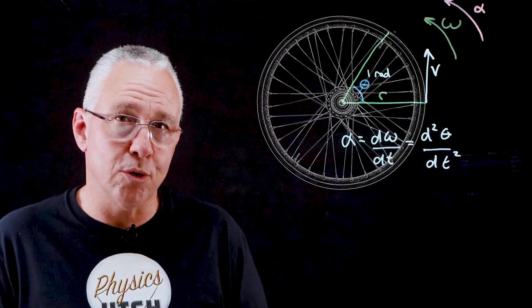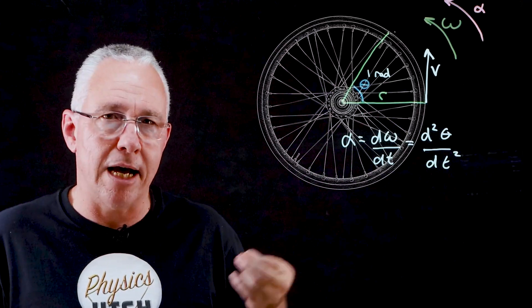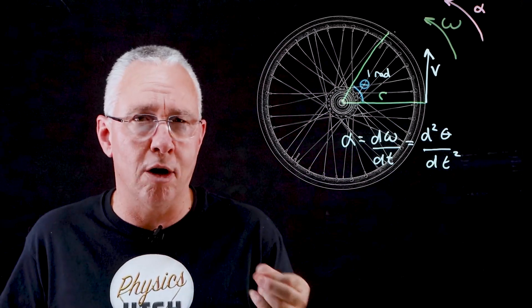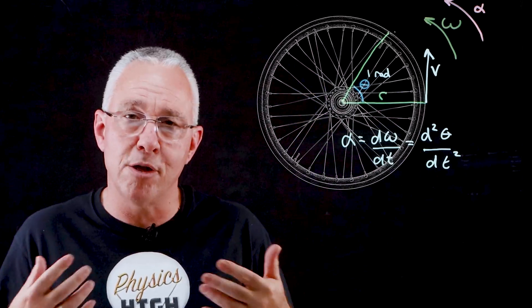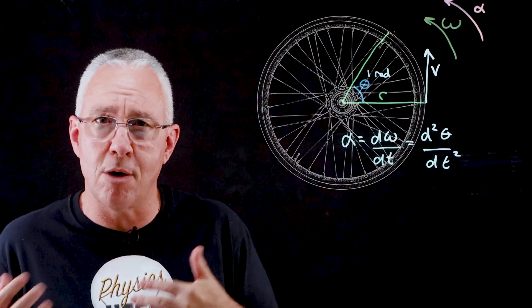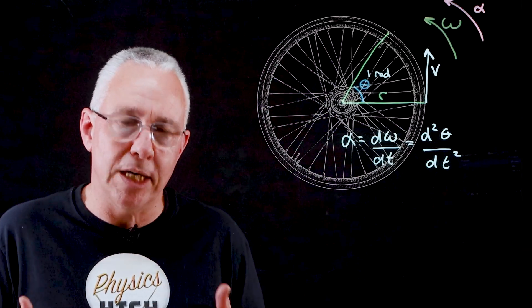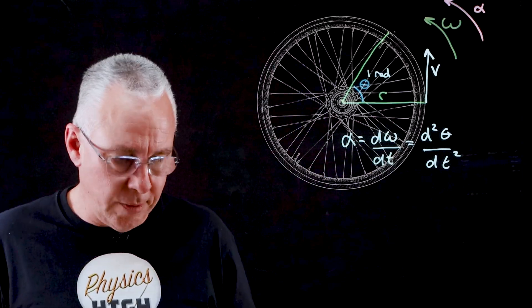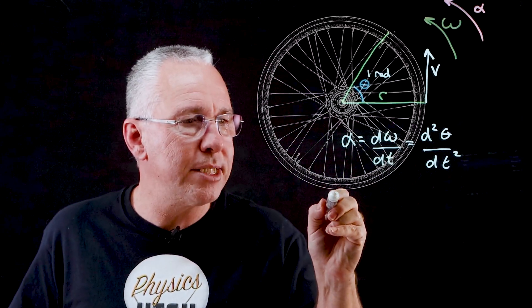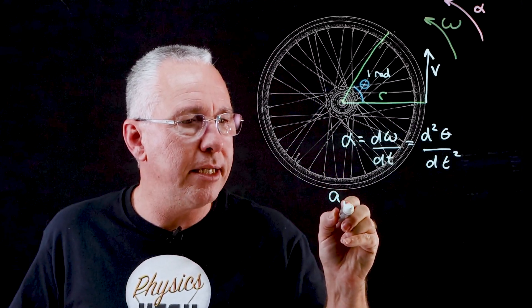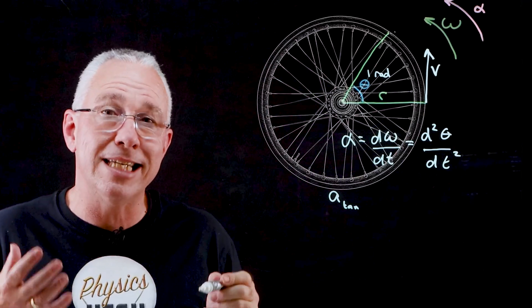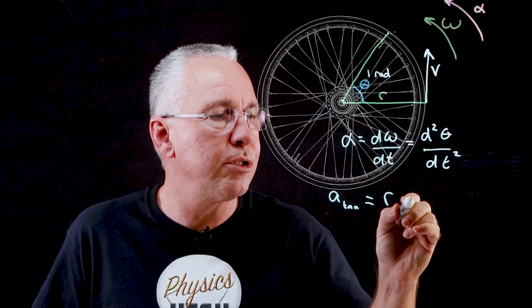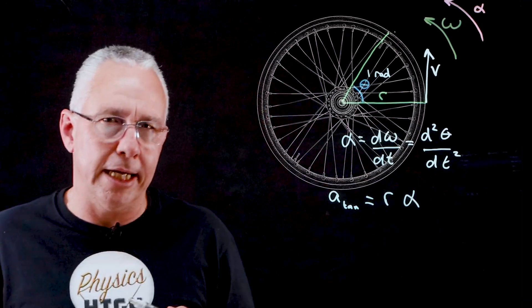So, we've already established, of course, that the linear displacement, s, is equal to rθ, and that the linear velocity, v, is equal to rω. Clearly, if I divide both by the same time, in other words, the same rate of change, we can get the same relationship between the linear acceleration that is tangential. And so, we make that particular point, we say a_tan to suggest its tangential acceleration I'm interested in, is equal to the radius multiplied by my angular acceleration.